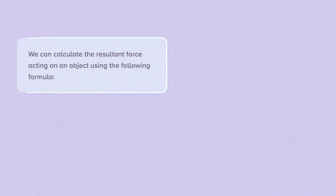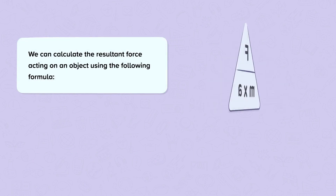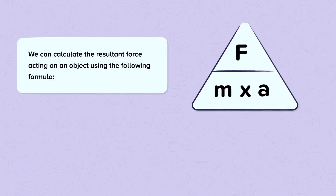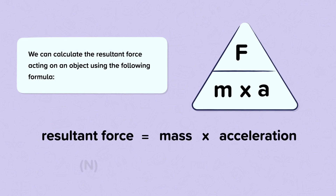We can calculate the resultant force acting on an object using the following formula. The resultant force in newtons is equal to the mass in kilograms multiplied by the acceleration in meters per second squared.